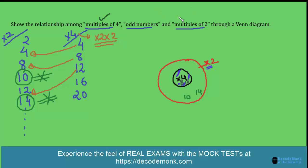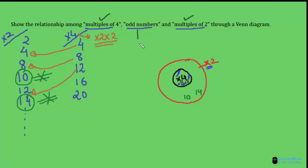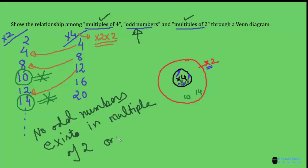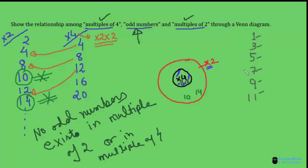Now let us talk about odd numbers. No odd numbers exist in the multiples of 2 or multiples of 4. Odd numbers like 1, 3, 5, 7, 9, 11 will never appear in multiples of 2 or multiples of 4, because odd numbers are not divisible by 2 while all even numbers are. So we make another circle that does not intersect with the circle representing multiples of 2 — this circle represents the set of odd numbers.